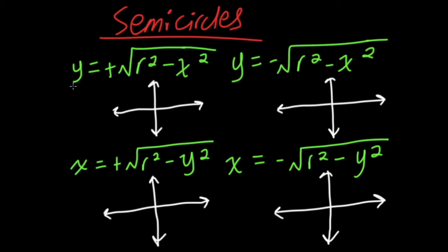So, for this first example, we have y equals positive root r-squared minus x-squared. Because y is the subject, being y equals, we are going to be on the y-axis, so up or down with our semi-circle. And because it's positive, it will be up on the positive part.